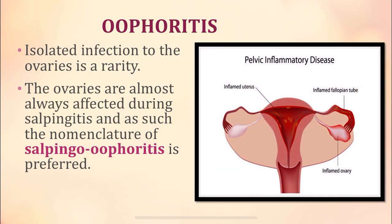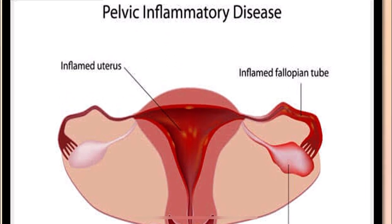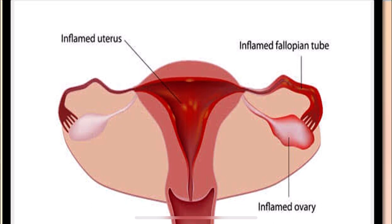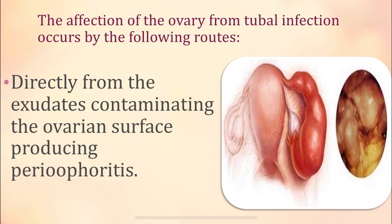The isolated infection of the ovaries is a very rare condition. It will be affected along with the fallopian tubes. If the inflammation of the fallopian tubes occurs, it is salpingitis. And together, the inflammation of both ovaries and the fallopian tubes, the nomenclature is salpingo-oophoritis.